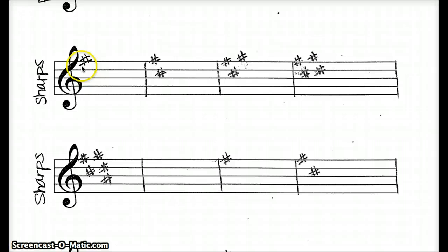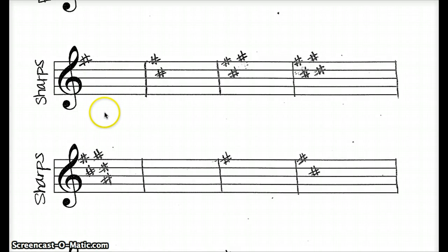So if we have one sharp here, and we're thinking about our order of sharps, which is F-C-G-D-A-E-B, we're going to find the last sharp — which in this case is the only sharp, F-sharp. You're going to go up one letter in the alphabet, which would take us to G, so you're going to be in G major.